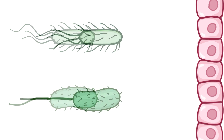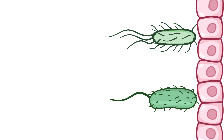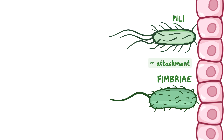Finally, bacteria can move or attach to other cells and surfaces with the help of structures found on their external surface. They have pili, which are hair-like structures that allow them to attach to other cells, and when these are shorter, they're called fimbriae, and help the bacteria attach to surfaces. They can also have flagella, which are long, whip-like protrusions that allow the bacteria to move.